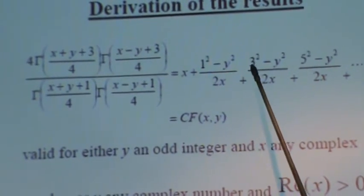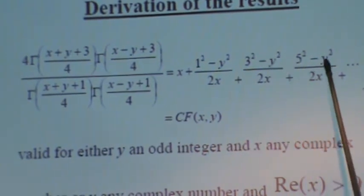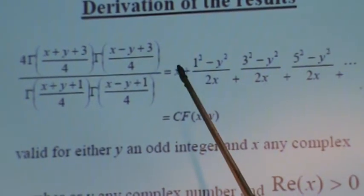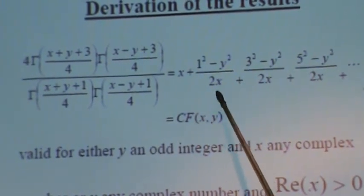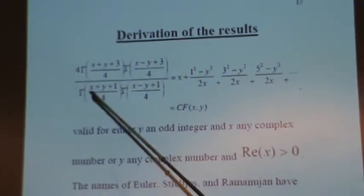Instead of just 1 squared, 3 squared, 5 squared in the numerator, there's also a minus y squared. There's the familiar x, and then 2x, 2x, 2x in the denominator. And then you get these things.